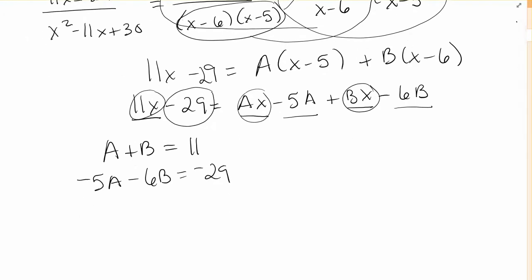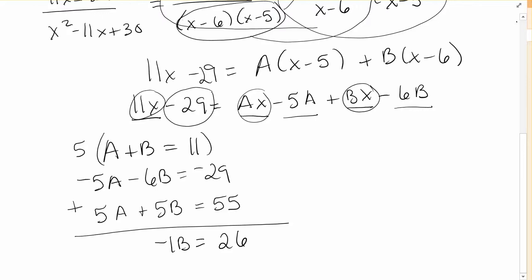So at this point it's just a system of two equations. We have two equations and two unknowns. If we were to multiply this first equation by 5, we would have 5a plus 5b equals 55. And then if we add these two equations together, negative 5a and positive 5a cancels. Negative 6b and positive 5b is negative 1b. And that's equal to negative 29 and 55. If you add those numbers together, you will get 26. And so then you get that b is equal to negative 26.